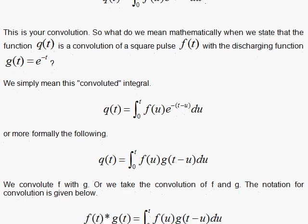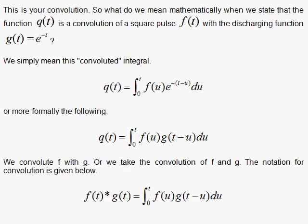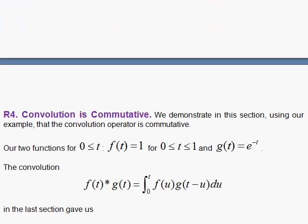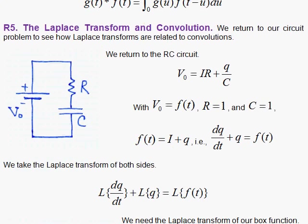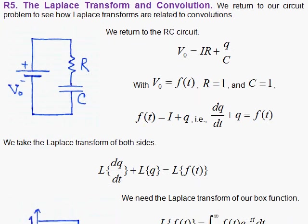In other words, the answer is the convolution of f of t with g of t, where g of t is e to the minus t. Well, I want to look at the Laplace transform and convolution. So this section is R5.